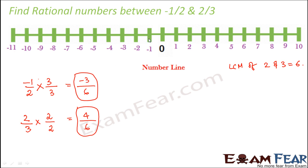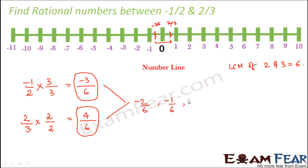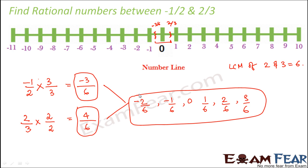-3/6 is a negative rational number lying left of 0, equivalent to -1/2. And 4/6 equals 2/3, lying between 0 and 1. Since the denominators are now the same, we need numbers between -3 and +4 in the numerator. These are -2, -1, 0, 1, 2, 3, giving us -2/6, -1/6, 0, 1/6, 2/6, and 3/6 — all rational numbers lying between -1/2 and 2/3.